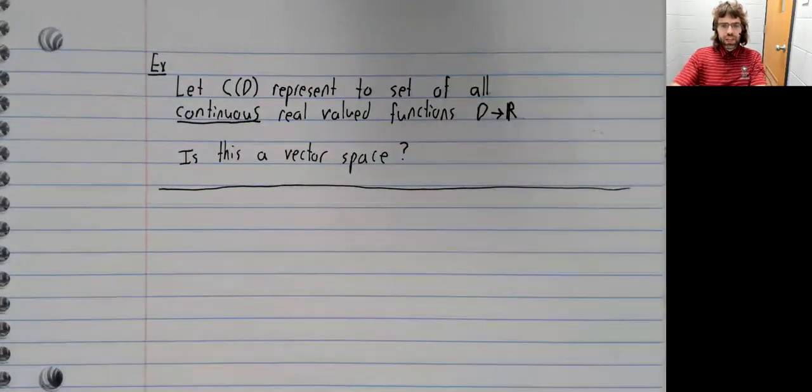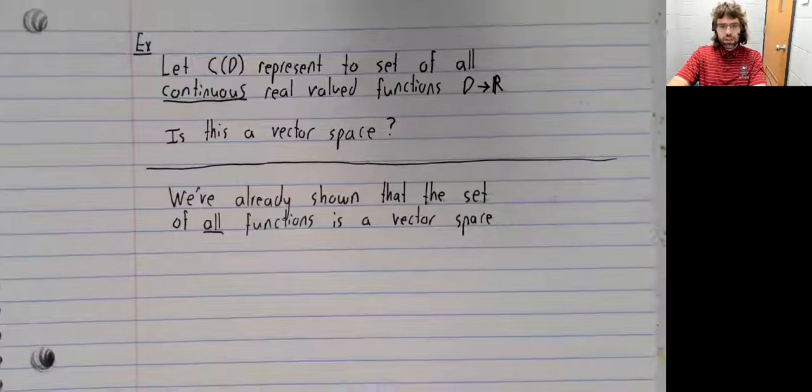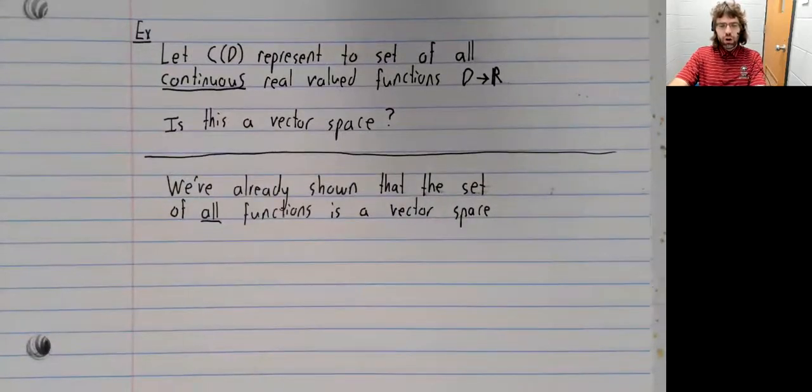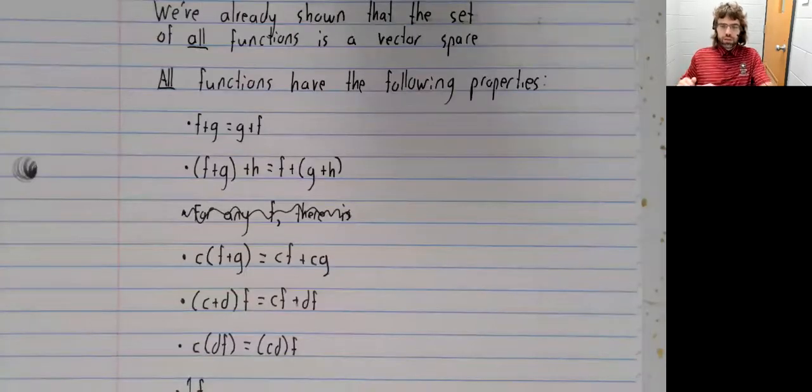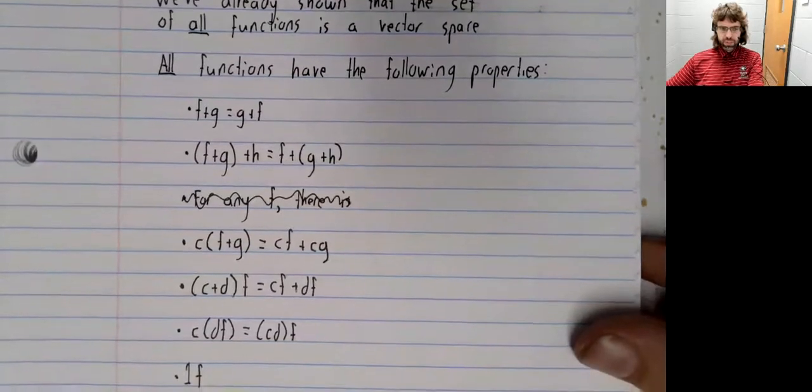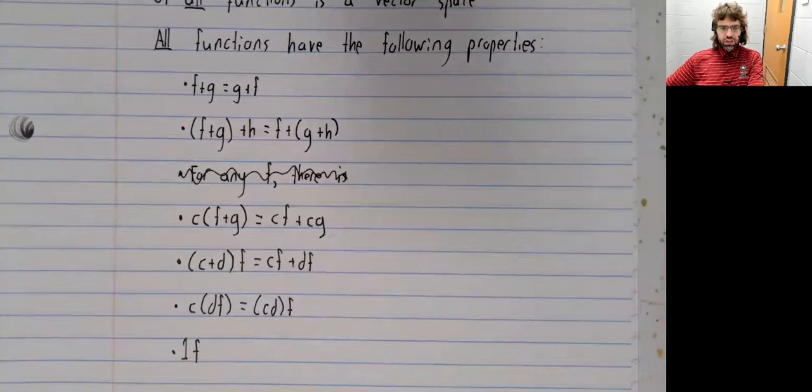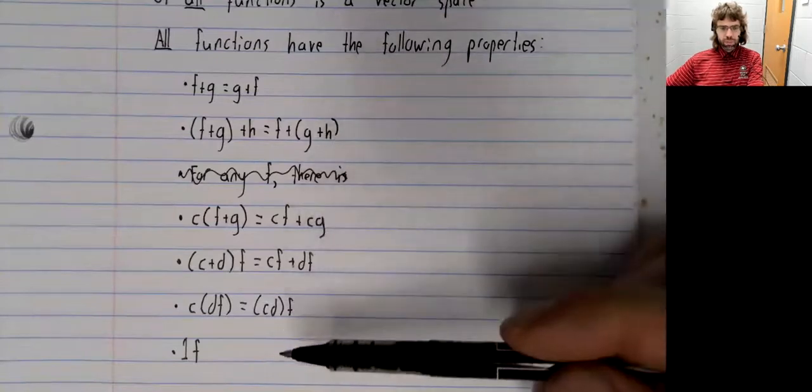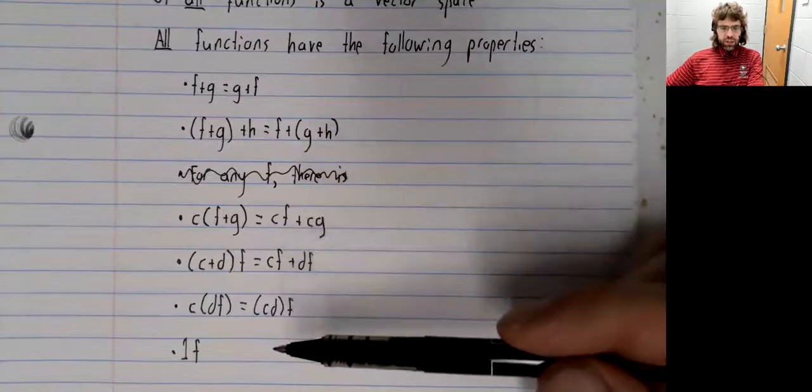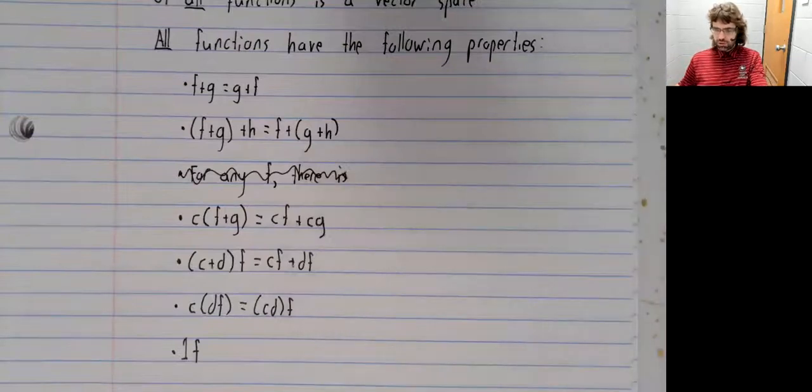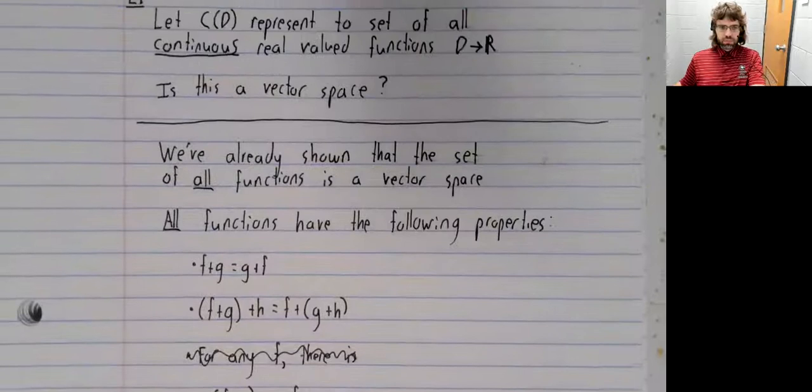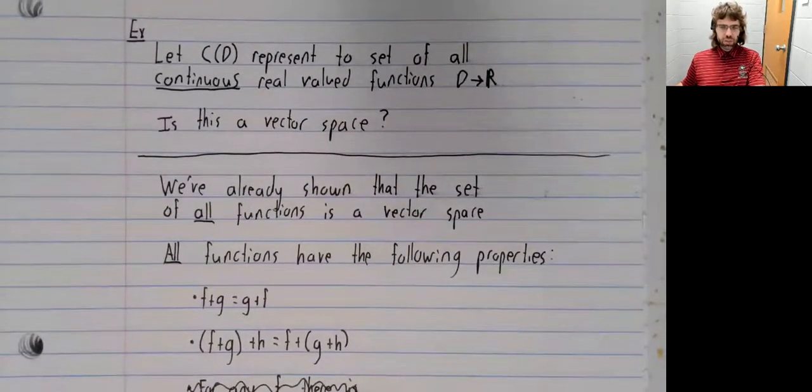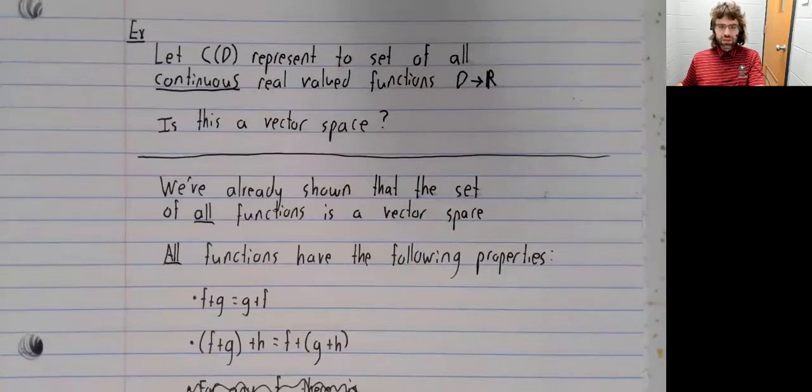we make the observation that we've already shown that the set of all functions from D to R is a vector space. And therefore, if the set of all functions is a vector space, then all functions have these vector space properties. And if all functions have these properties, certainly the set of continuous functions have these properties.